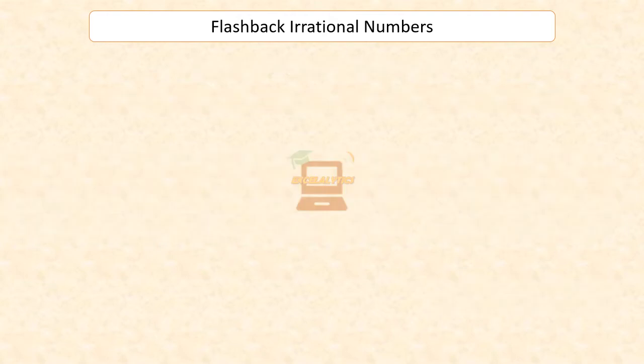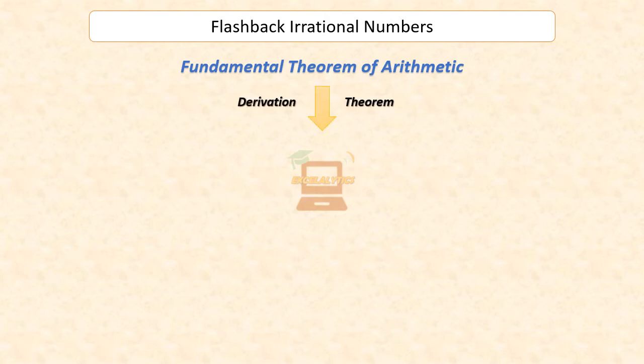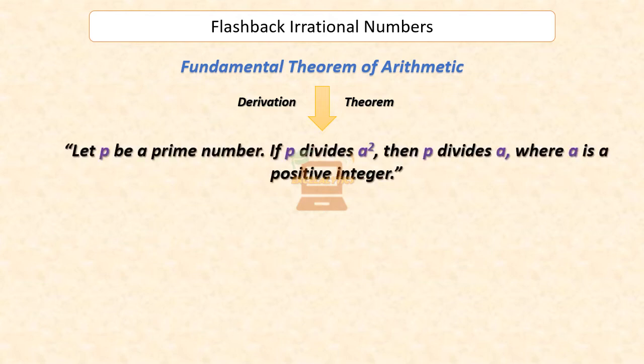Now let us go back to the definition of the fundamental theorem to derive and prove one very important theorem that will be extensively used in establishing irrationalities of numbers. Let P be a prime number. If P divides A squared, then P divides A, where A is a positive integer.